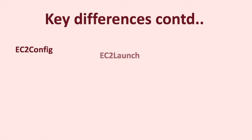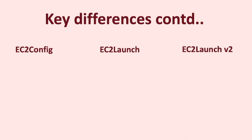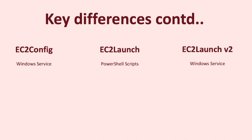Let's talk about the second difference: the runtime. When you install EC2 config and EC2 launch v2, they run as a Windows service under the local system account. However, EC2 launch when installed is a set of PowerShell scripts that can be configured for execution.